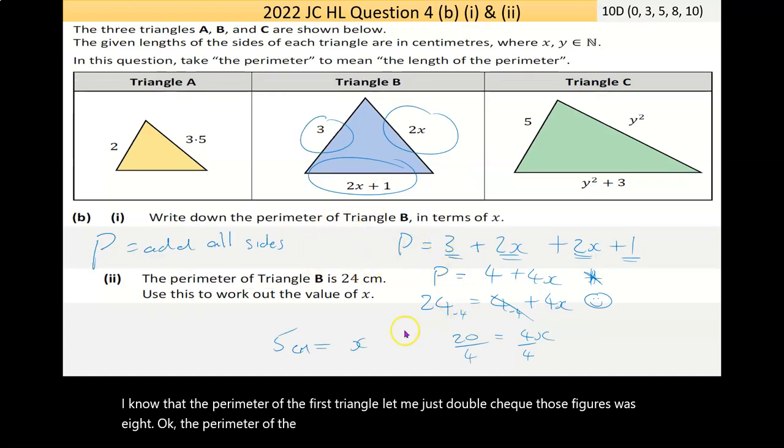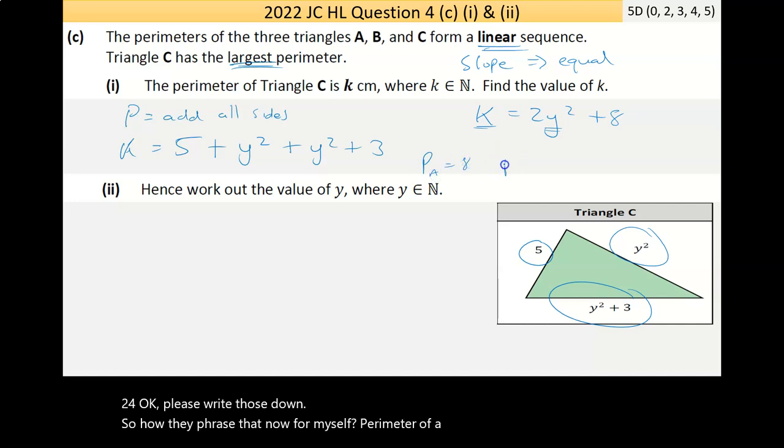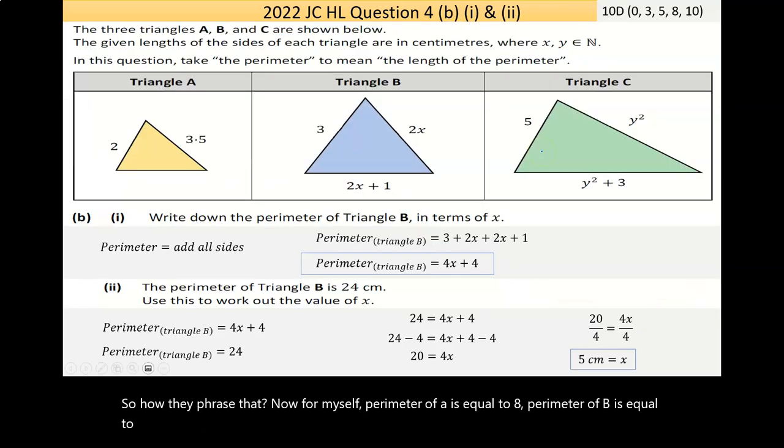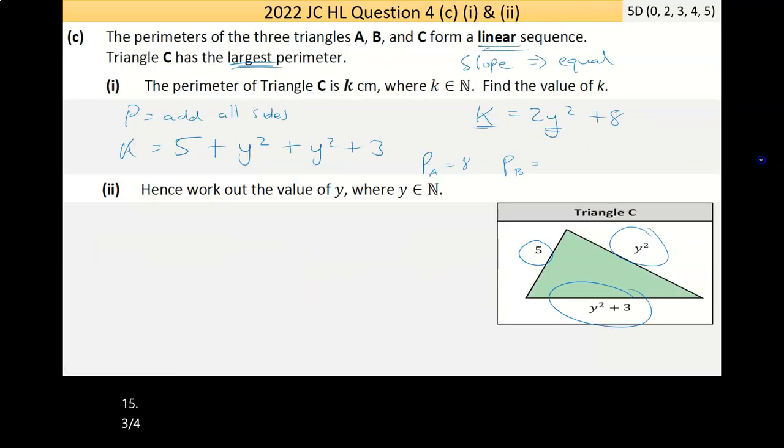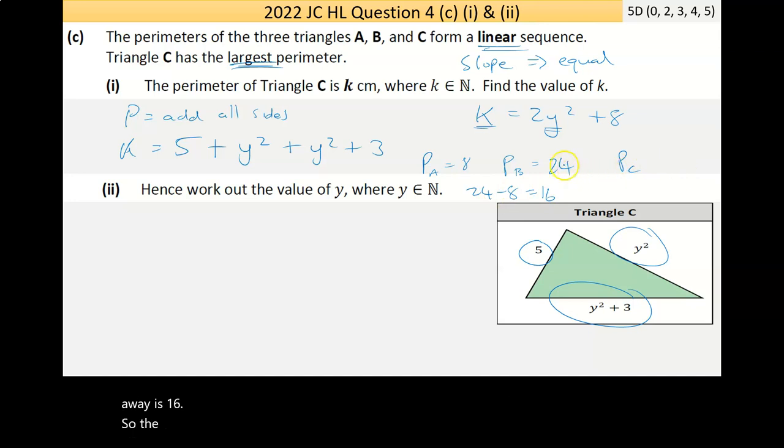I know the perimeter of the first triangle was 8. The perimeter of the second one was 24. So perimeter of A is equal to 8. Perimeter of B is equal to 24. So the perimeter of C, if you see there's a sequence here, because it's linear, it's going to go up the same amount. So 8, the difference between 24 and 8 is 16. So the perimeter of C should be 16 bigger than 24. So it would be 24 plus 16 would be 40. So k is equal to 40.